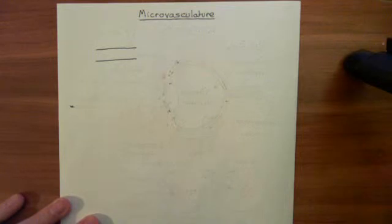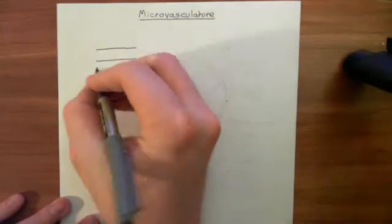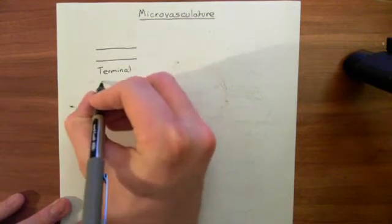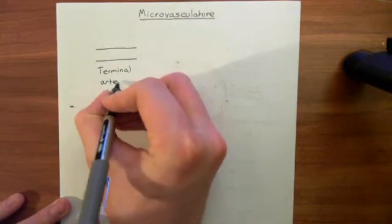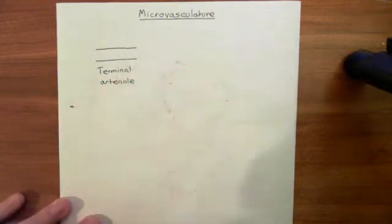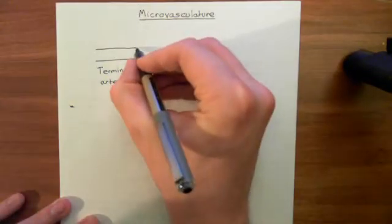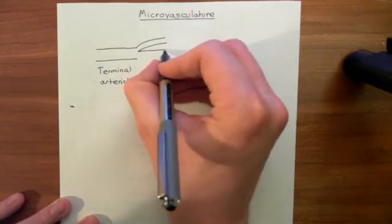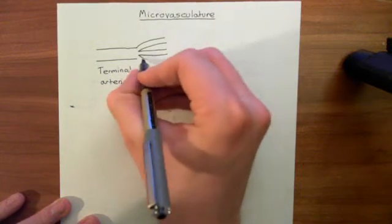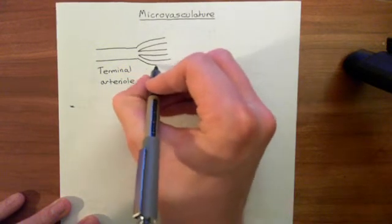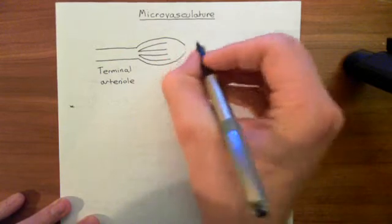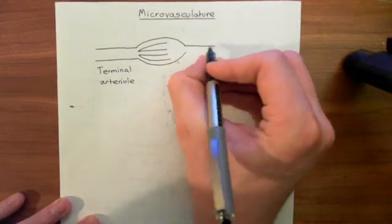To specify that you mean an arteriole just before it branches into capillaries, you can use the term terminal arterioles. So we're talking about very small arterioles that are about to branch into capillaries. A terminal arteriole will then branch into capillaries — many, many capillaries — which are even tinier little blood vessels, a single cell thick. A single red blood cell can fit down the lumen of a capillary.